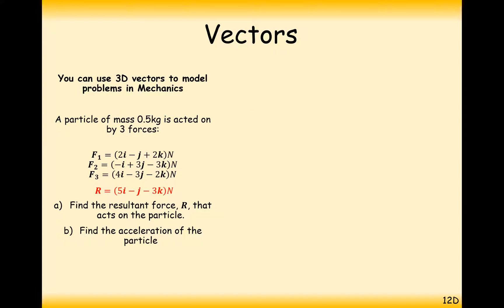Find the acceleration of the particle. Now, remember that a formula that links mass and forces together is F equals ma. In this case here, m is just going to be a number rather than a vector. The force is going to be a vector and the a is going to be a vector as well. So we're going to get 5i minus j minus 3k equals 0.5a. Double both sides and you get 10i minus 2j minus 6k equals the acceleration.